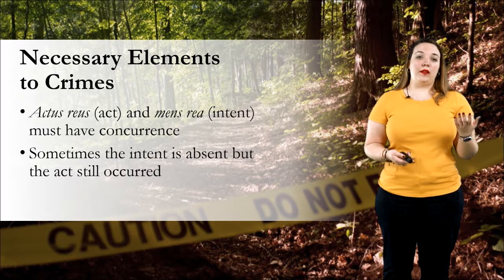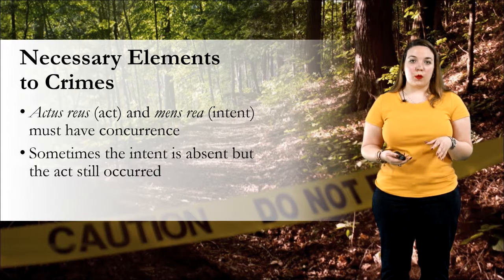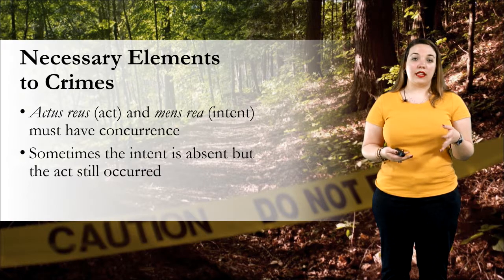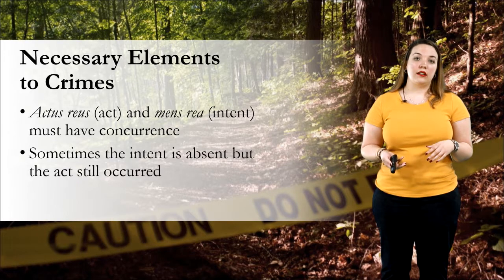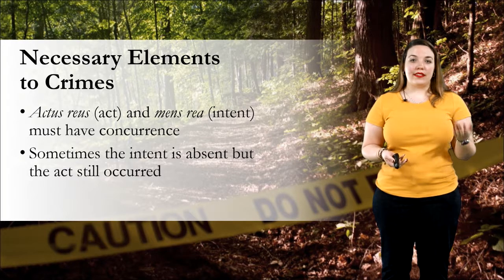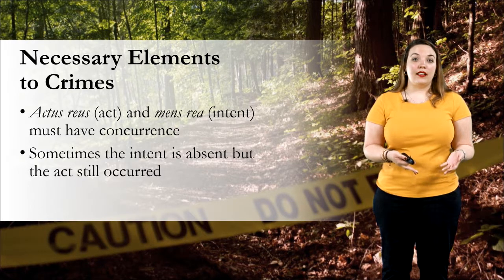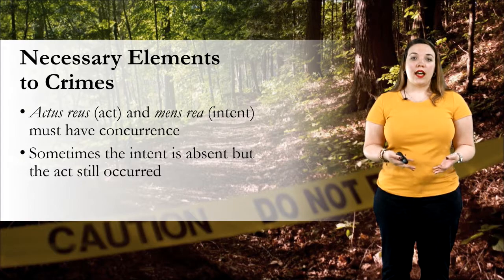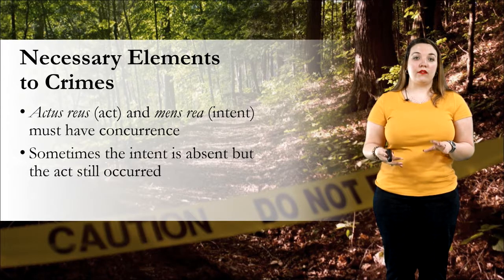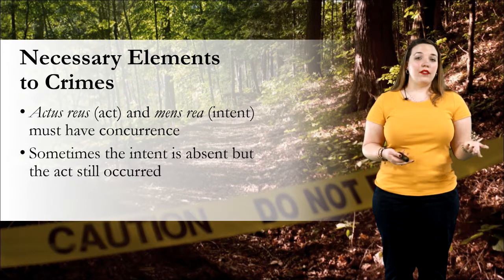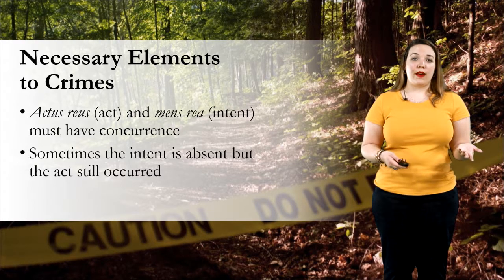For example, if a pedestrian runs across a crosswalk while you're driving through a yellow light, you could potentially be guilty of involuntary or negligent manslaughter. Even though the intent wasn't there to kill that person, you still ran a yellow light and ended up hitting a pedestrian with your car. Strict liability allows prosecutors to find individuals guilty for lower-level crimes even though the mens rea is absent.